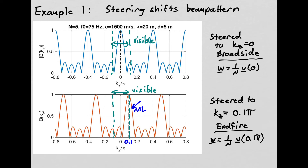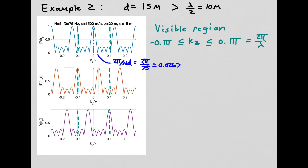Now let's look at a different example where we do expect aliasing. We use the same 5 sensors, same center frequency, same propagation speed of 1500 m/s, and thus the same wavelength. But instead of 5-meter spacing, we're spacing sensors every 15 meters. Spatial Nyquist is not met — 15 meters is greater than λ/2 — so we expect aliasing somewhere.